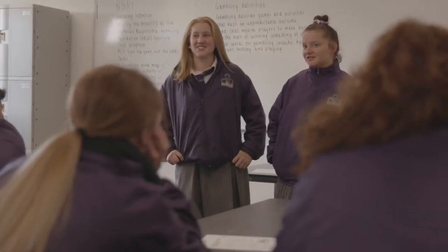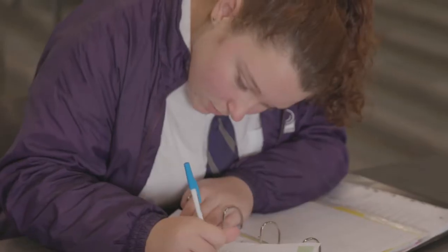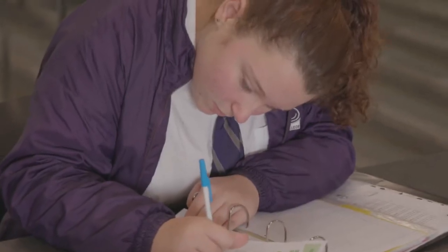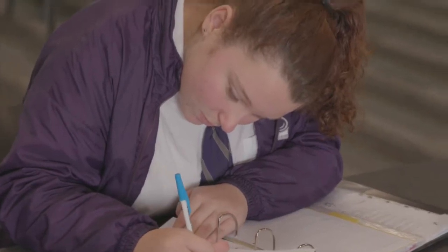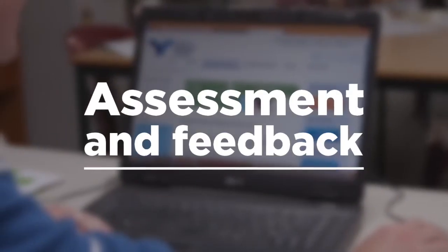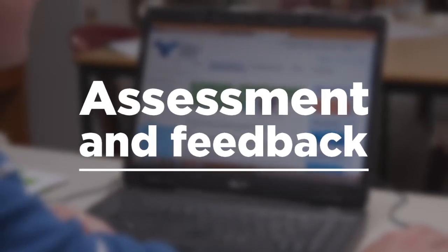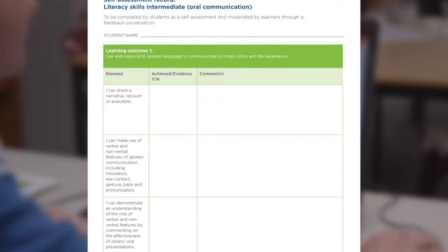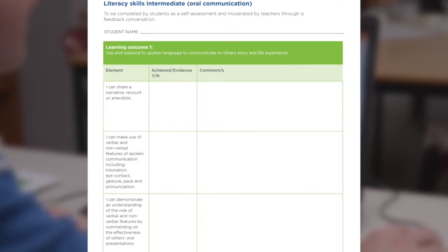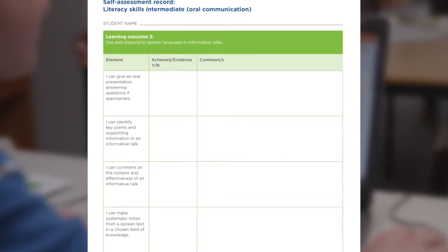Time permitting, there is an extension activity where students can write the full script for their pitch, including a catchy introduction and conclusion that revisits the key facts. You can find an assessment matrix in the Appendix. This is based on a self-assessment model. We'd encourage you and your students to refer to this document through the learning journey as a feedback guide, and then together at the end. It may be adapted to include peer assessment too.